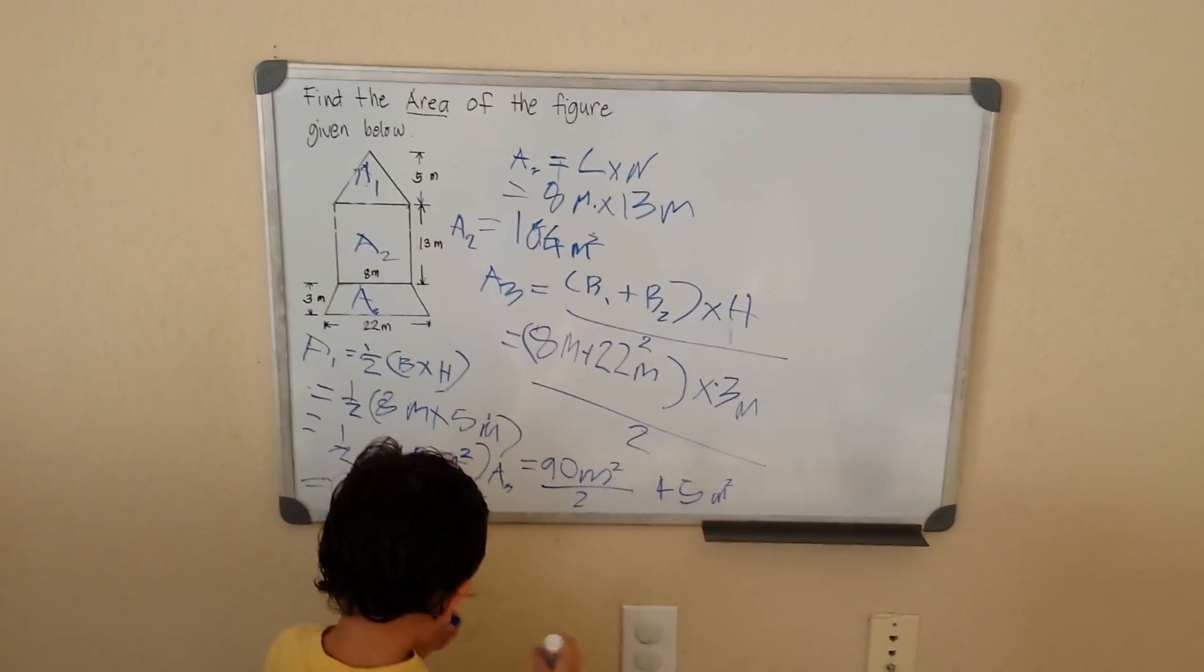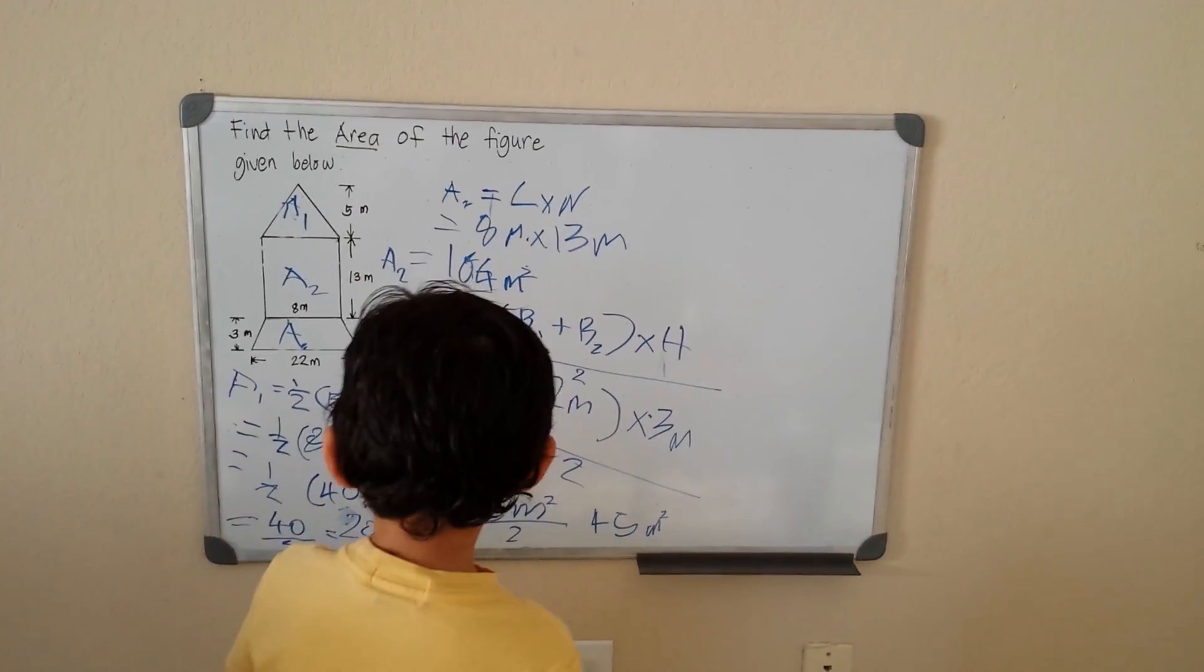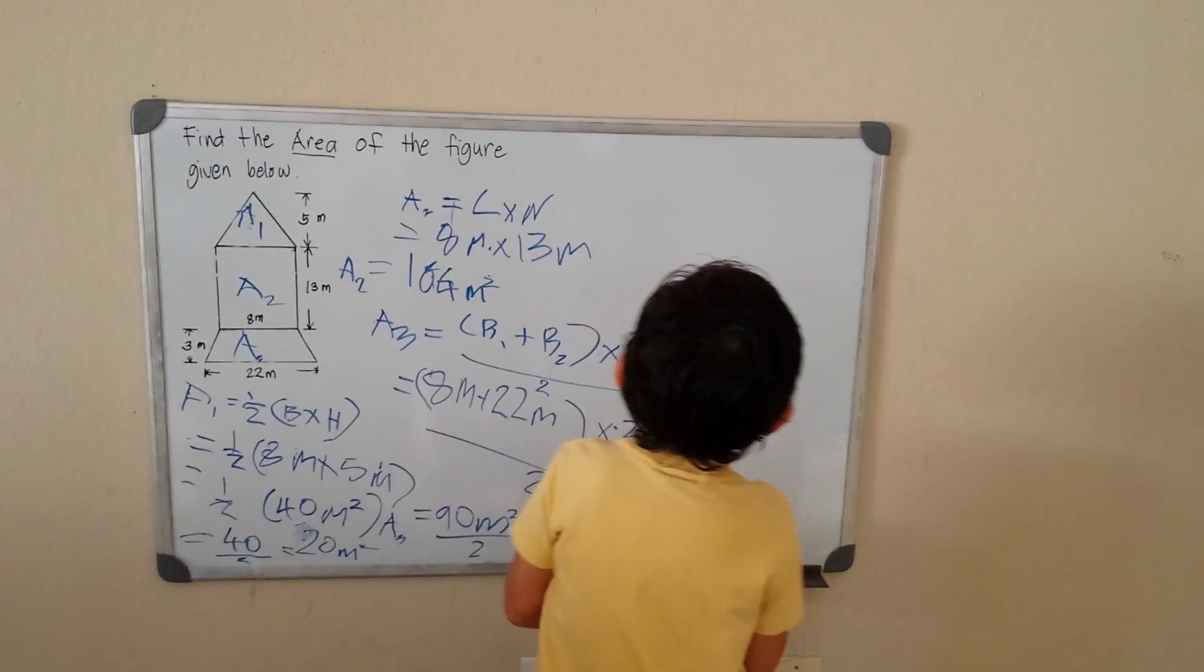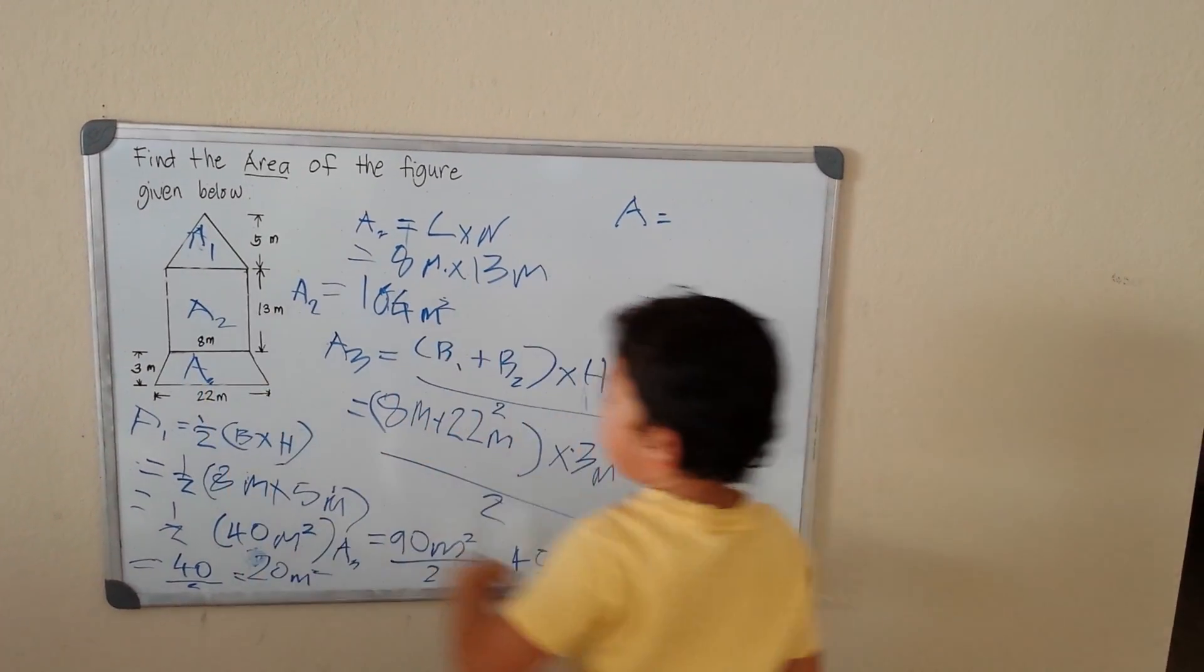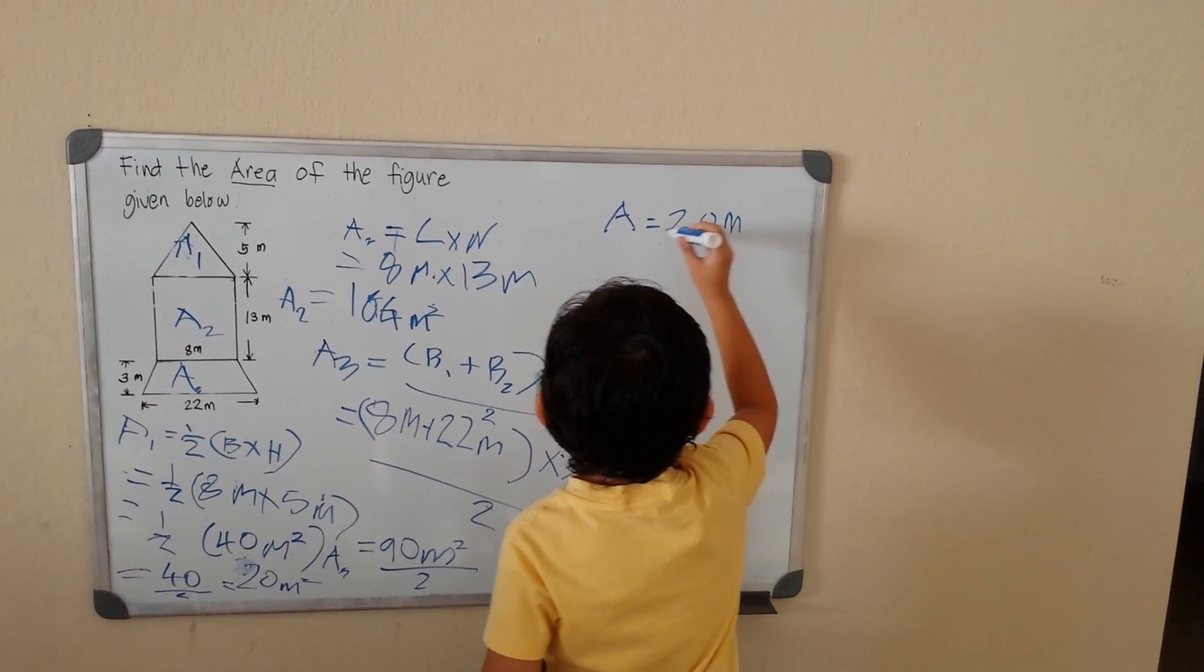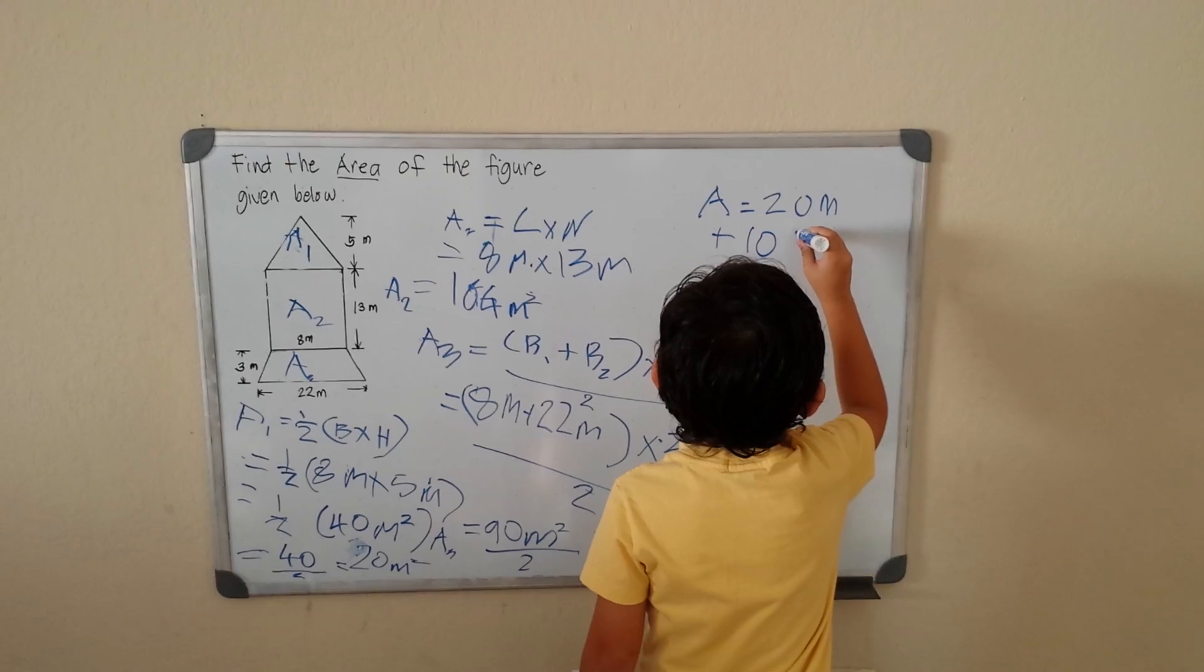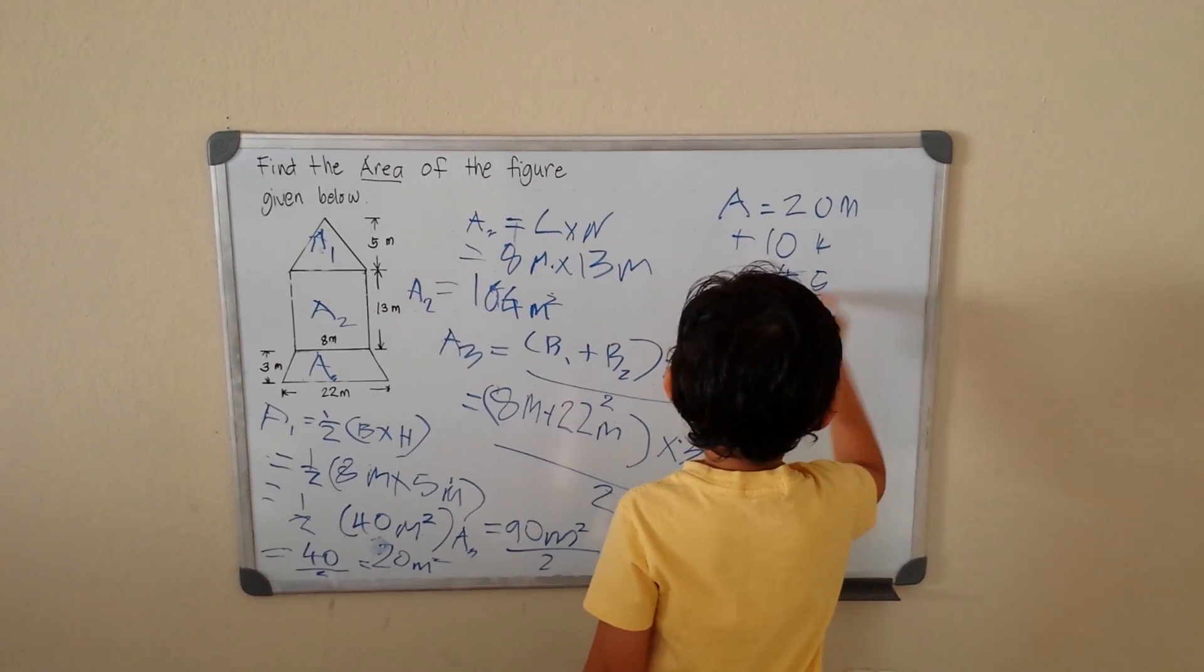Now we can get the area of the rocket ship now because we already got the area of the triangle, the area of the rectangle, and the area of the trapezoid. So we add them up. Area equals 20 meters plus 104 plus 45.